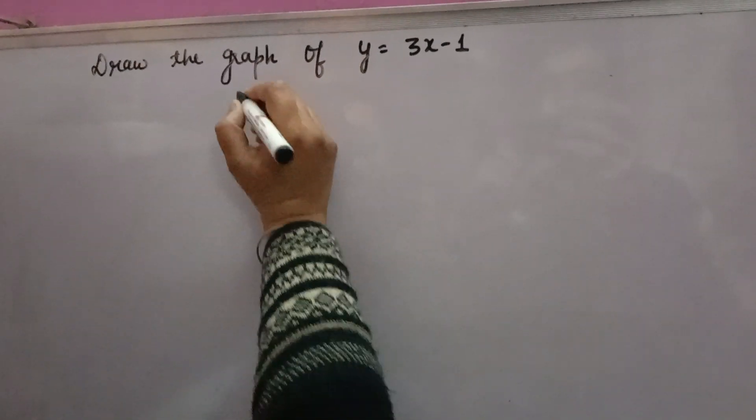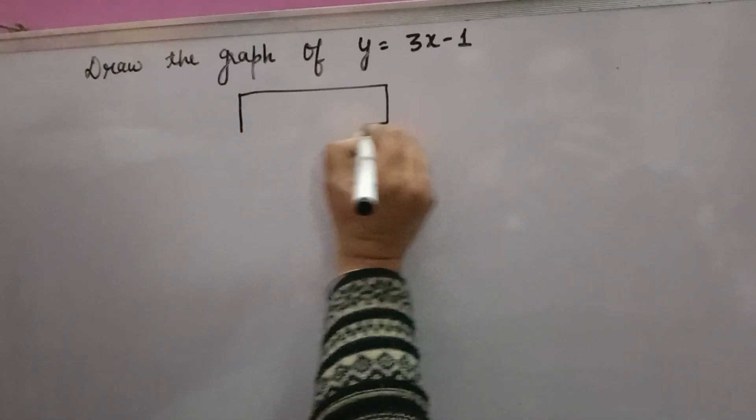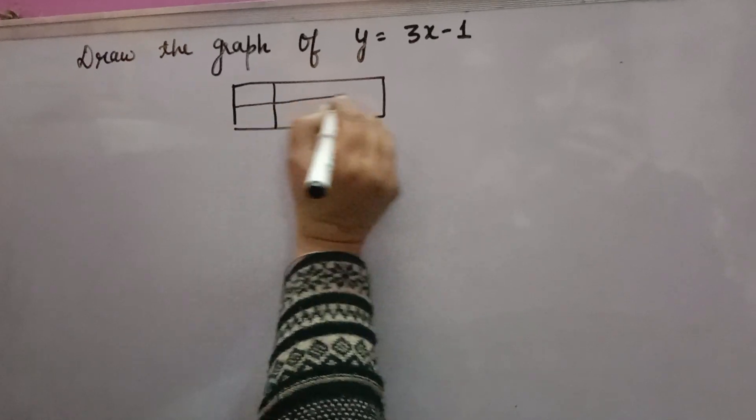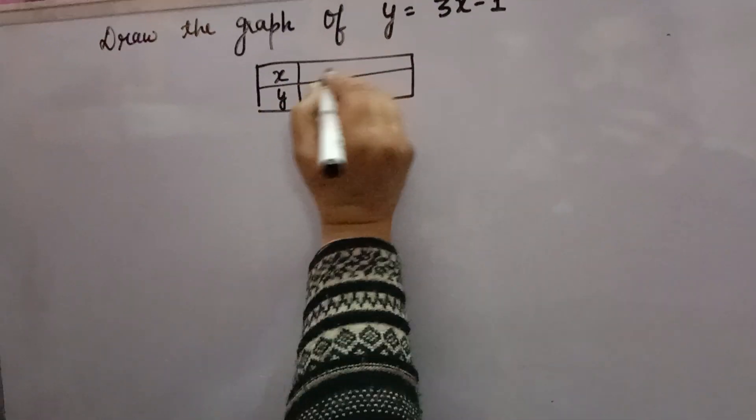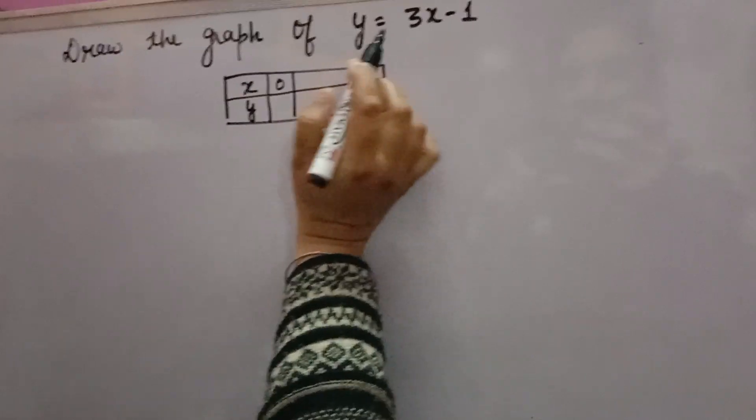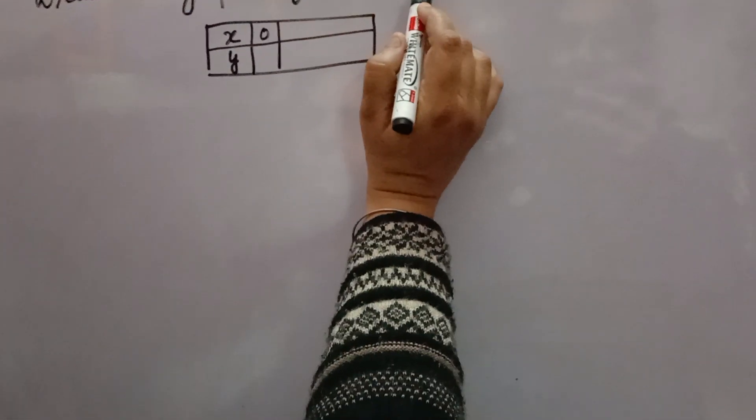Graph of equation y equals 3x minus 1. Firstly, you will make a table. You will give different values of x and you will find corresponding values of y. Suppose x is 0: 3 into 0 is 0, 0 minus 1...